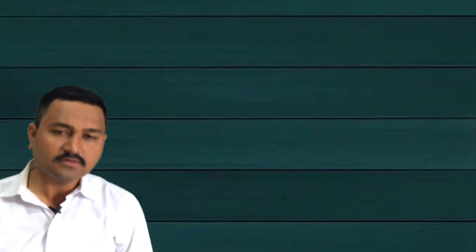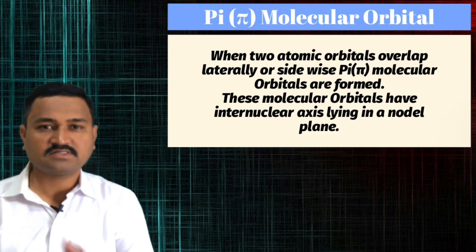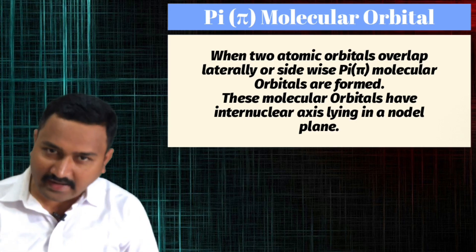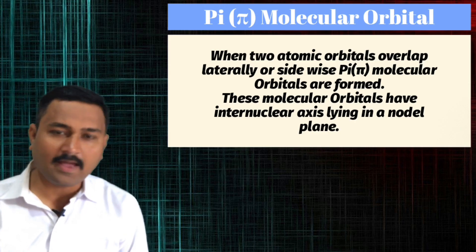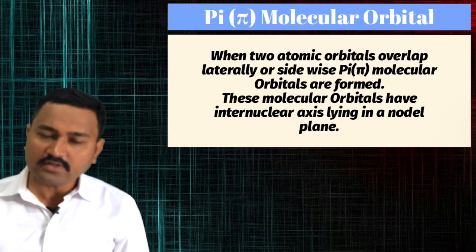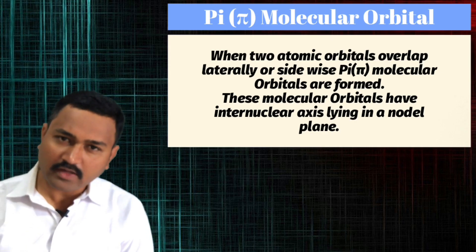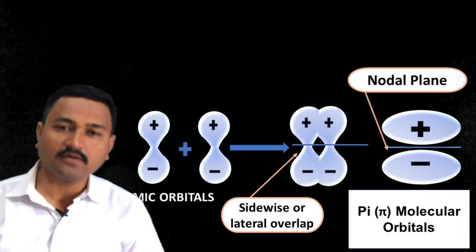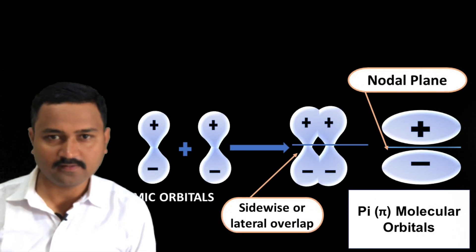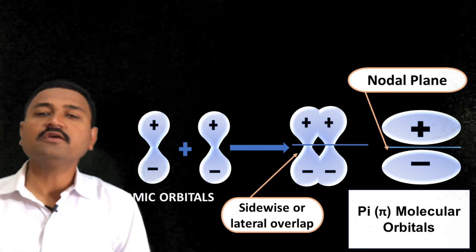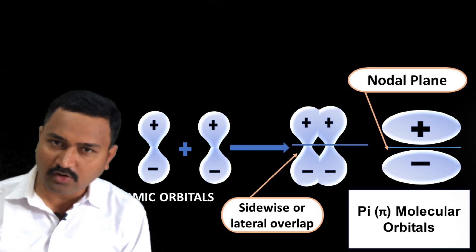The second type is the pi molecular orbital. When two atomic orbitals overlap sidewise, laterally, or parallel to each other, they form pi molecular orbitals. In pi molecular orbitals, the internuclear axis lies in a nodal plane, as shown here. Generally, pi molecular orbitals are observed in p atomic orbitals.